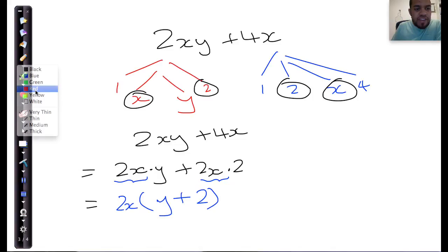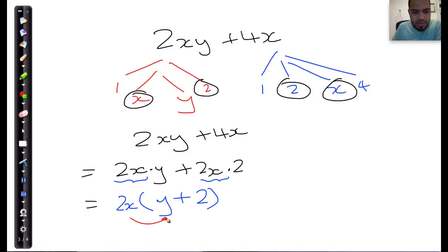Now the main aim of factorization is when you multiply this thing out, that multiplied by that, and this one multiplied by this one over here, it must give you what you started with, and then you can say it has been factorized.